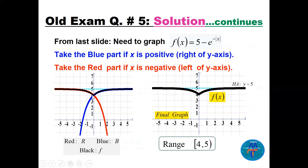Combining both parts: take the blue portion for positive x and the red portion for negative x to form the final graph of f. The range of this final graph is [4, 5) — closed at 4 and open at 5.